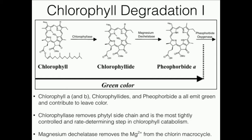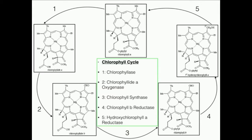In this video we're going to see how chlorophyll is degraded. It turns out that the main chlorophyll that gets degraded is going to be chlorophyll A. In general, when you want to degrade chlorophyll, the chlorophyll B needs to be converted back to A. That's the major pathway.